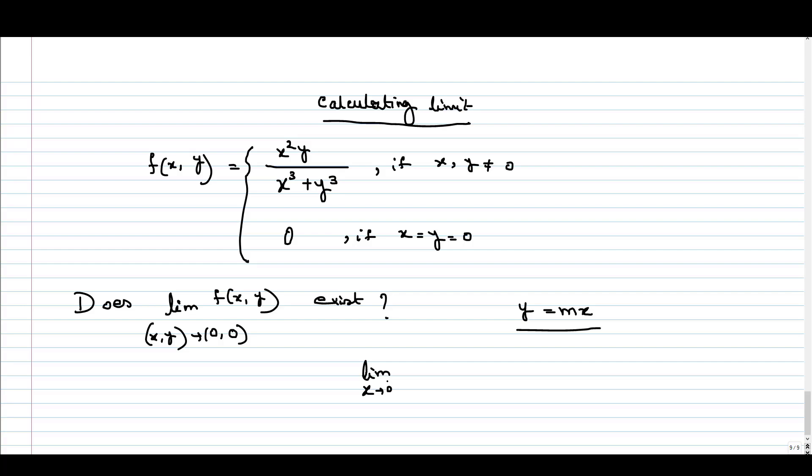we will get the limit as x tends to 0 of x² times mx divided by x³ plus (mx)³, which is mx³ divided by x³ + m³x³. The x² cancels out.